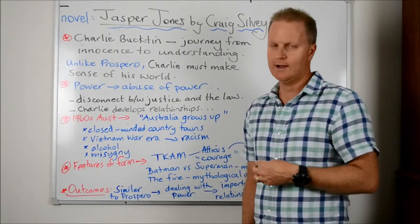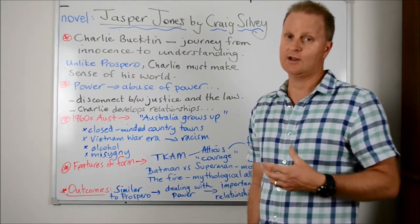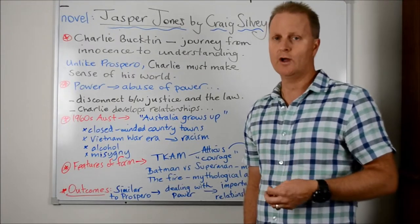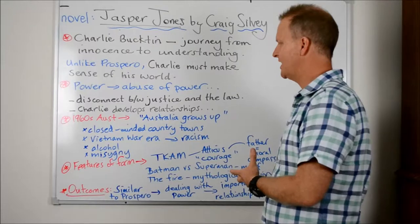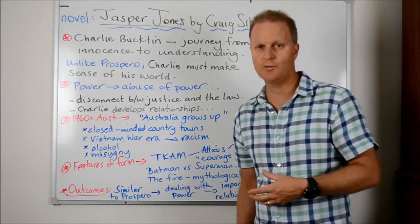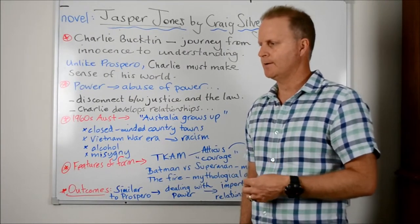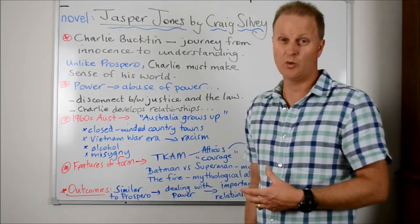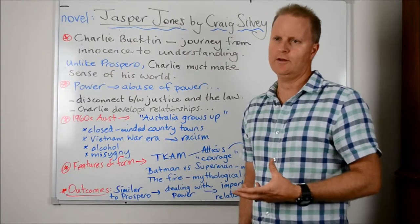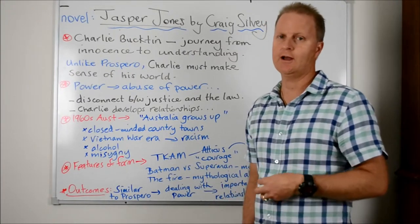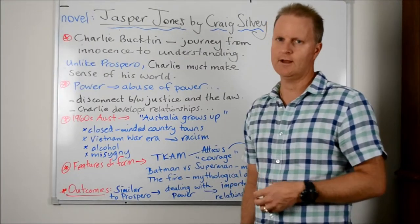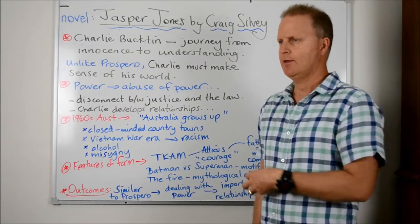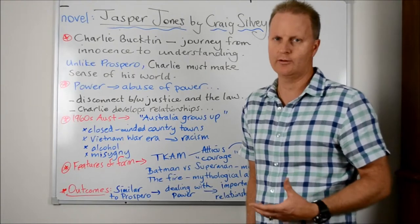Then what we're going to do is look at the context of the time. The novel was set in 1960s country Western Australia. Silvey was very critical of this notion that the 1960s was the era where Australia finally grew up, and he rejects that premise. He paints a picture of a very closed-minded country town in the Vietnam era. The racism that's evident is explored in the novel — it's not done so well in the film. It certainly looks at the culture of alcohol abuse and the misogynist, sexist culture inherent in that 1960s realm. We would use examples that illustrate some of that in the sense of exploring the abuse of power.